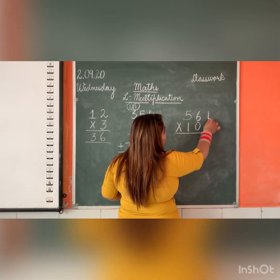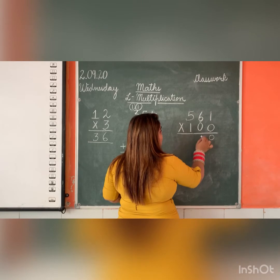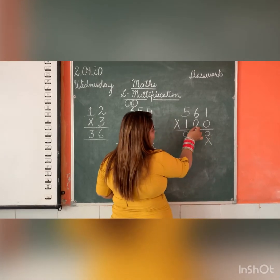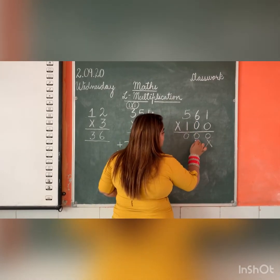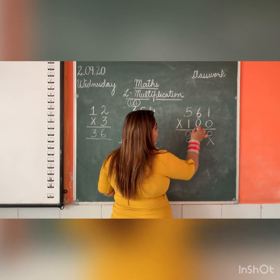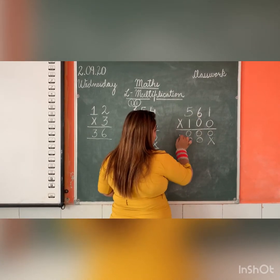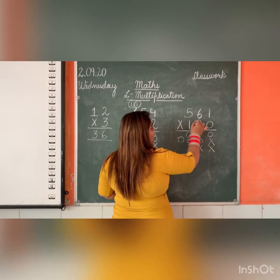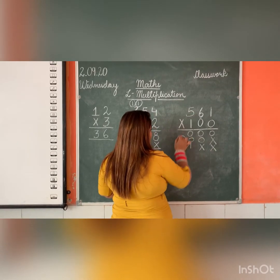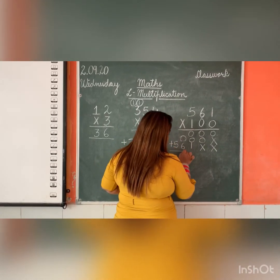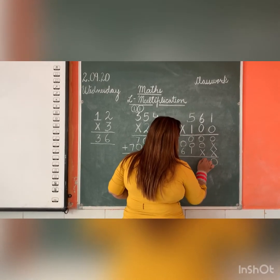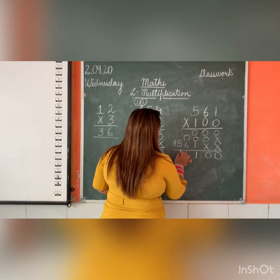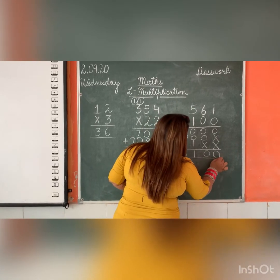Similarly, in 3 digits: 0 ones are 0, 0 sixes are 0, 0 fives are 0. Then again, 2 crosses. 1 one is 1, 1 six is 6, 1 five is 5. Now we will add: 0, 0, 0 plus 1 is 1, 0 plus 6 is 6, and 5. So this is our product.